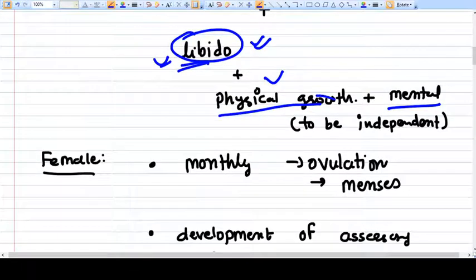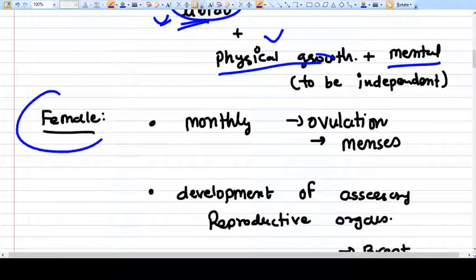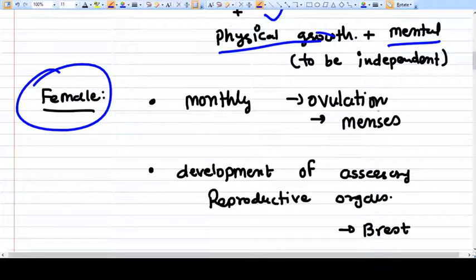In females, monthly ovulation starts because ovulation is the basic criteria for reproduction, and that's why menses will also start.